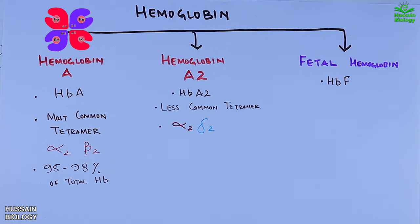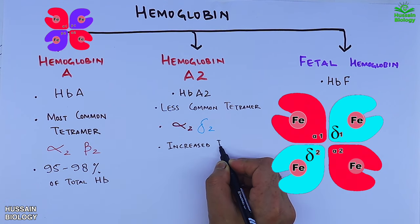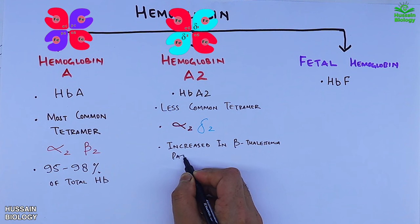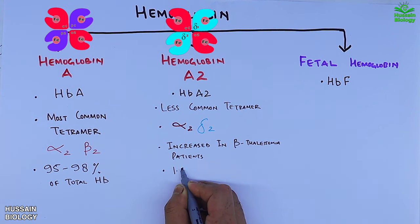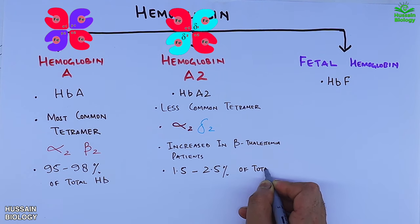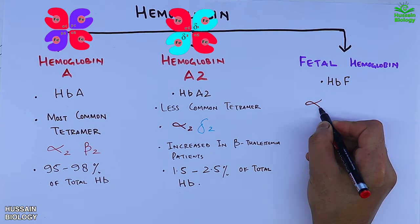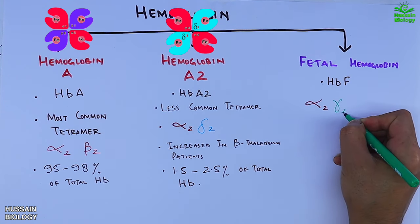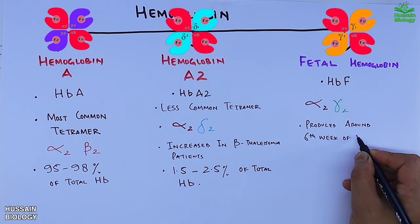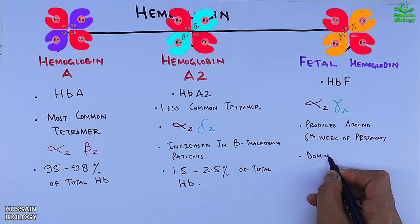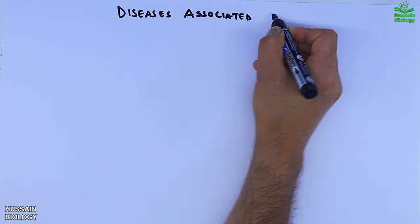Hemoglobin A2 is found to be increased in beta thalassemia patients, and in normal cases it is present at about 1 to 2.5% of total hemoglobin in the blood. Fetal hemoglobin has two alpha chains and two gamma chains. It is present in the fetus and is produced around the sixth week of pregnancy, dominating until the fourth month after birth.